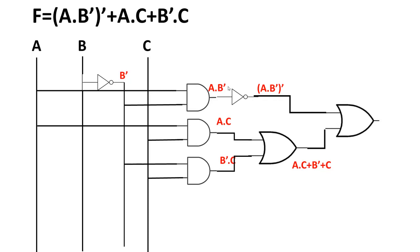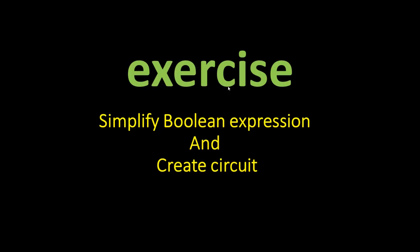I then add the two OR outputs together with a final OR gate to produce the final output: (A dot B-bar) entire bar plus A dot C plus B-bar dot C. To create a circuit you need thorough knowledge of each logic gate — how it works, its purpose, and its truth table. If you don't have that knowledge, please refer to my first and second videos.